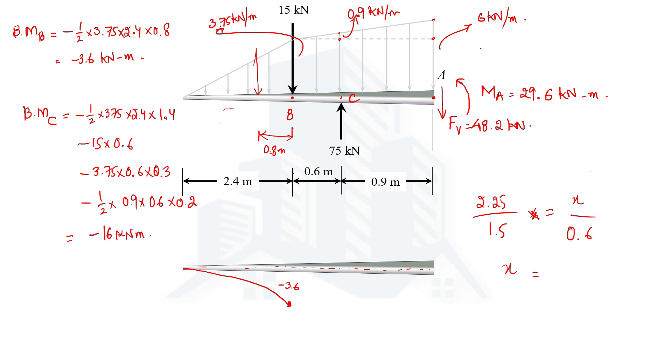This will be exactly at point C or here. The variability will be in the form of a curvature, something like this. This is minus 16 actually.